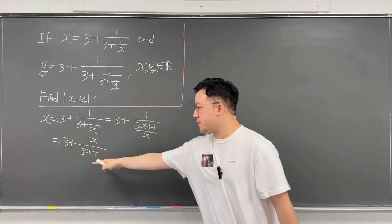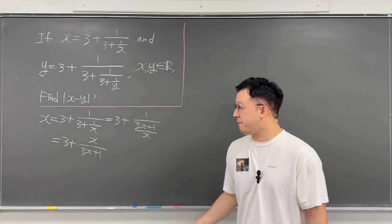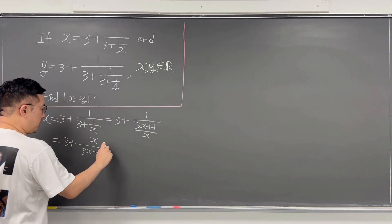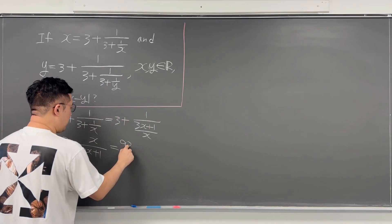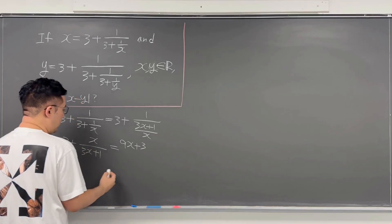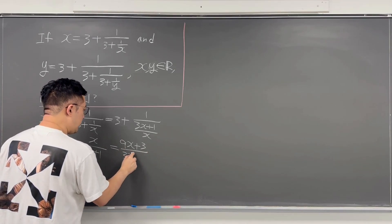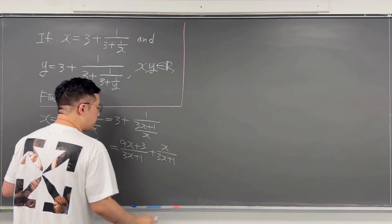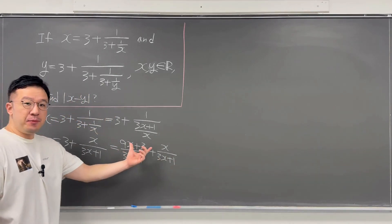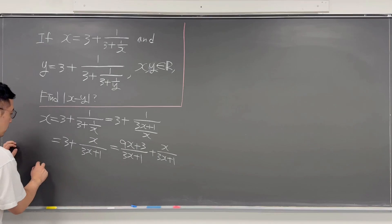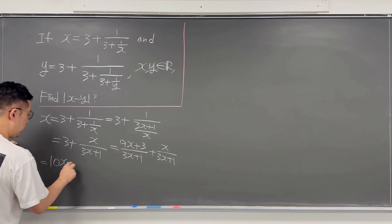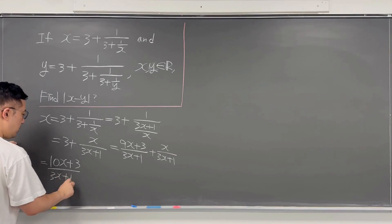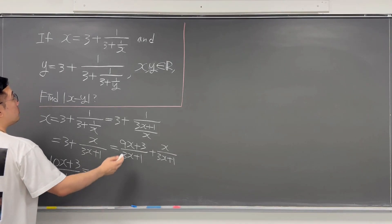So we still have two terms, so let's combine them into a fraction with denominator 3x plus 1. This 3 will become 9x plus 3 over 3x plus 1, and then you're adding x over 3x plus 1. If you add up the numerator, that is 10x plus 3, and the denominator is still 3x plus 1. That is now equal to x.